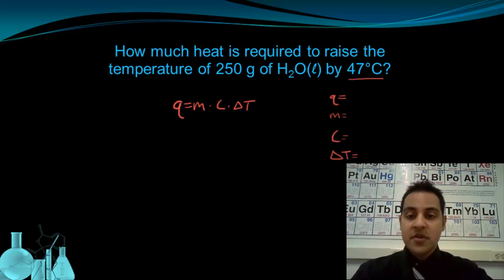So we can start with the 47 degrees Celsius. We just said that that is the amount of temperature we need to raise it by, so that's the change in temperature. So delta T is 47 degrees Celsius.